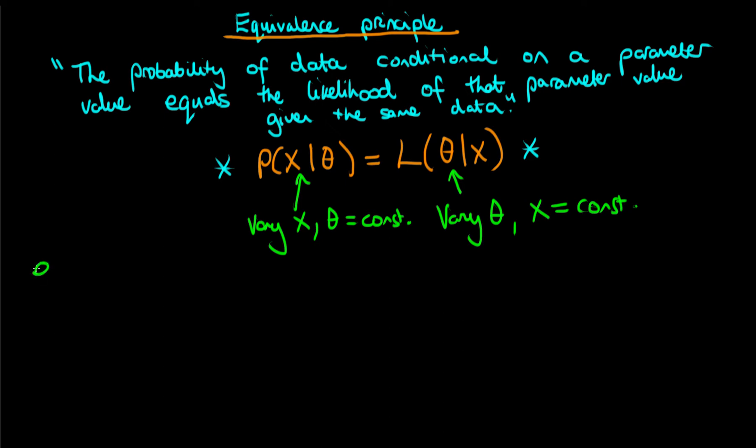And the example that I'm going to use to explain the equivalence principle is just flipping a coin. We're going to denote the outcome of that coin flip by the random variable x which is equal to zero if the coin lands tails up and it's equal to one if the coin lands heads up.